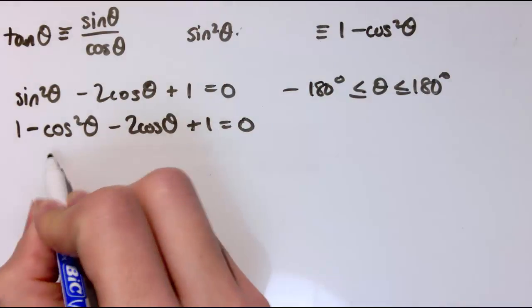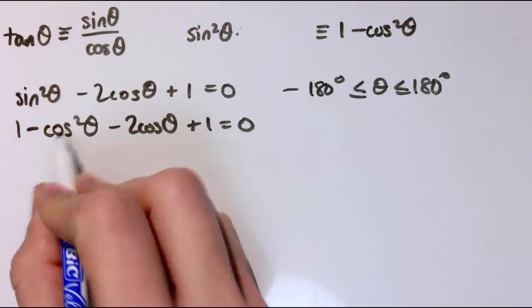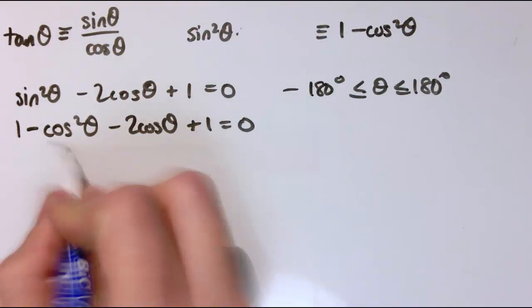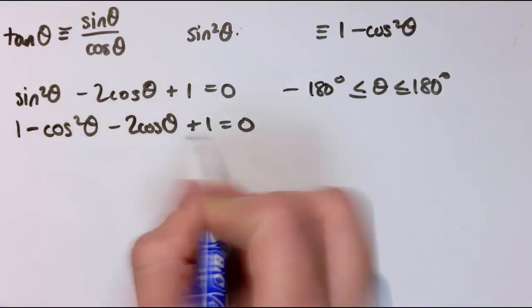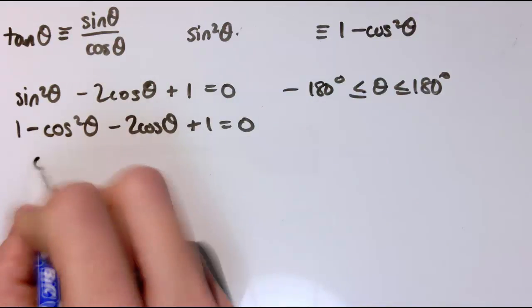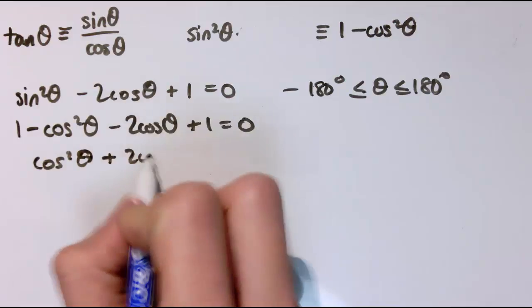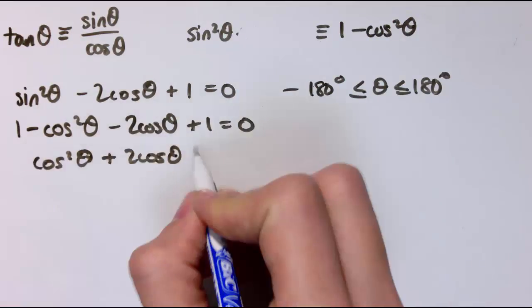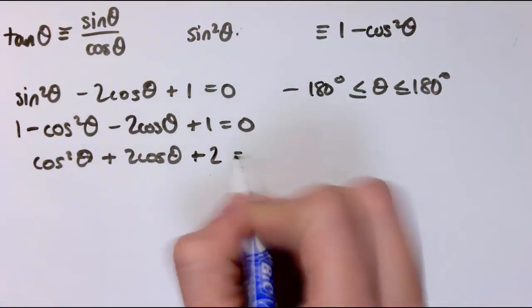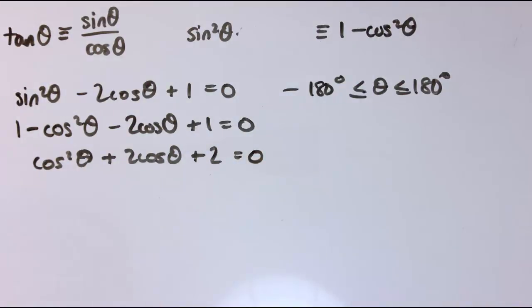So I've got 1 minus cos² θ minus 2 cos θ plus 1 equals 0. So let's essentially multiply everything by minus 1, or move it to the other side, and tidy up. So I've got 1 plus 1 is 2. So let's make this plus cos² θ plus 2 cos θ, and then I've got plus 2 equals 0.